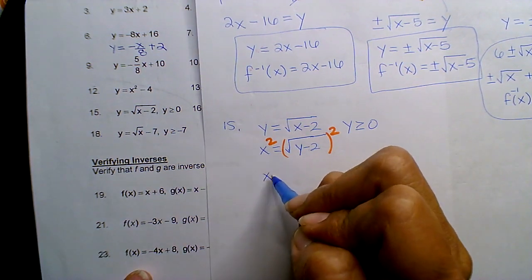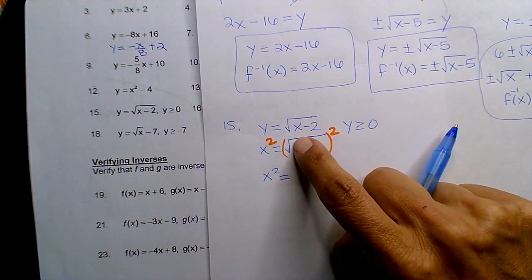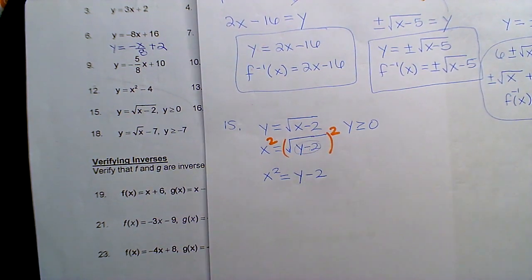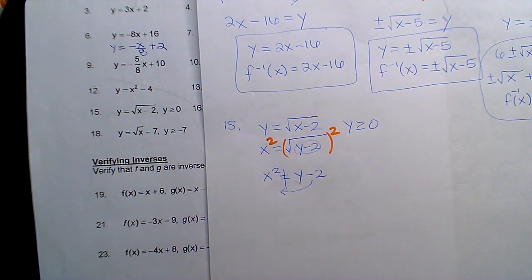So now I get X squared equals, and when you square a radical the radicand just comes right out unchanged. So I just write Y minus two. It's really easy, it's so systematic when you solve inverse functions. Now you just take that constant over because it's separated from the Y term.